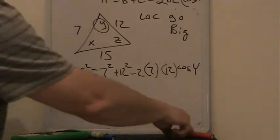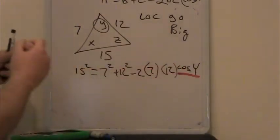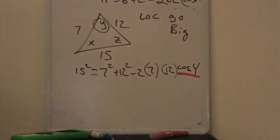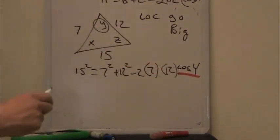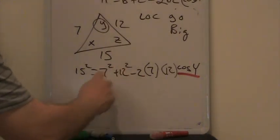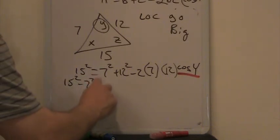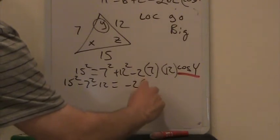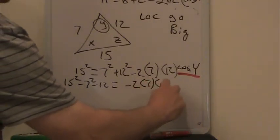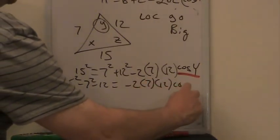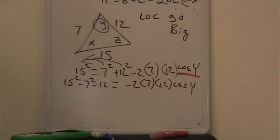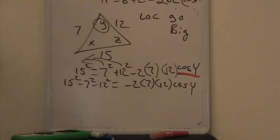Now we want to solve for y. We want to get this y all by itself. So here's where it takes a little bit of work. We've got to move this stuff all over here, divide, and take the inverse cosine. So I'm going to do two steps here. The first step is to get the 7 and 12 squared over. So I go 15² minus 7² minus 12². That would equal -2(7)(12) times the cosine of y. All I do is I move these over this way.